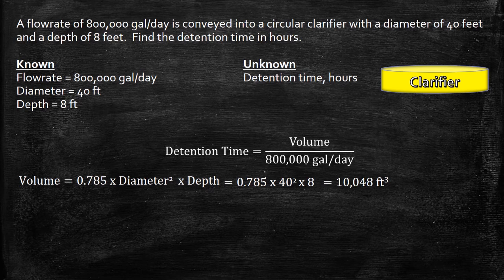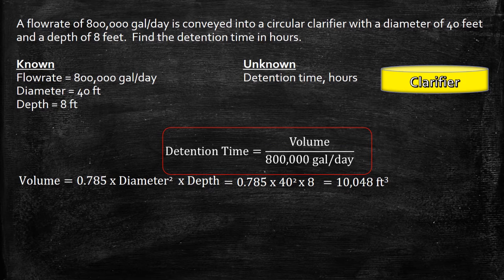Using our calculator, we get the volume as 10,048 cubic feet. If you look at the formula above us, notice that the flow rate is in gallons per day.